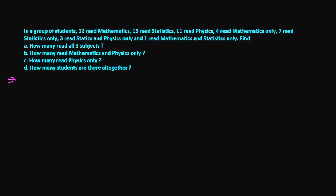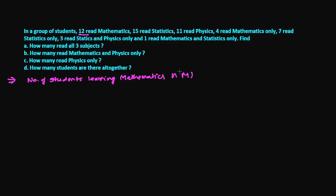For the first step, I'm writing all the given information. M represents mathematics, S represents statistics, and P represents physics. Number of students learning mathematics, n(M), is 12. Number of students learning statistics, n(S), is 15. Number of students learning physics, n(P), is 11.